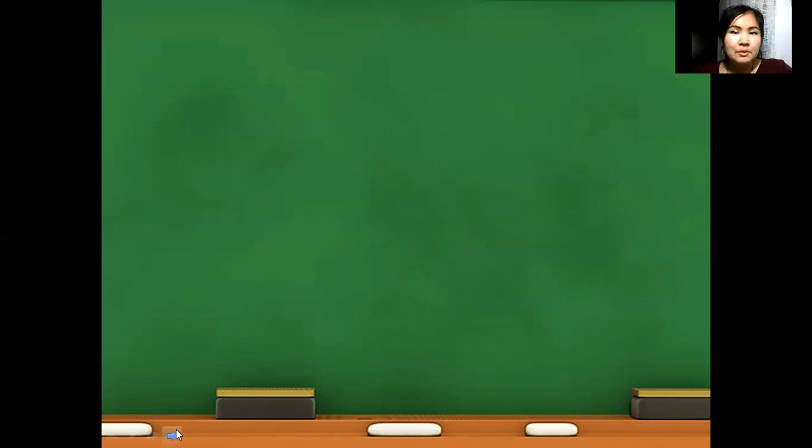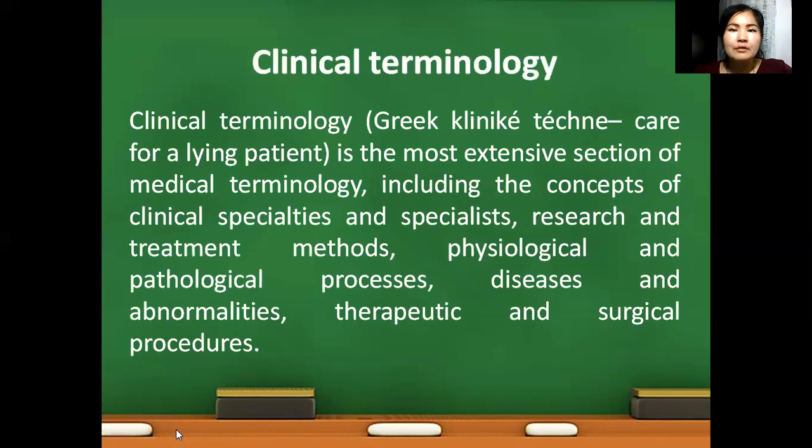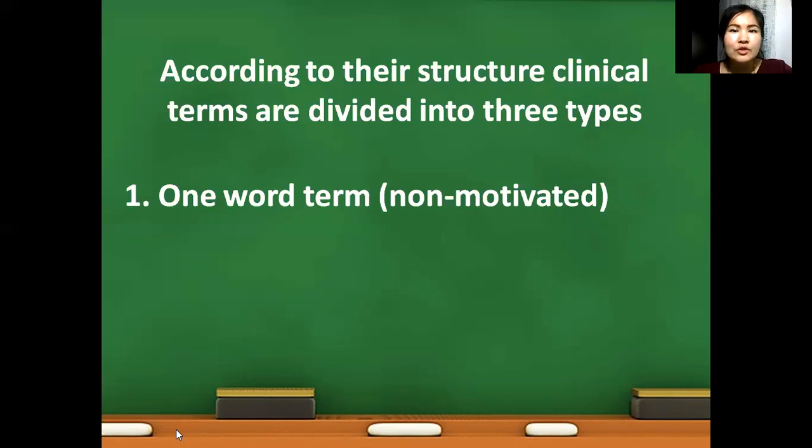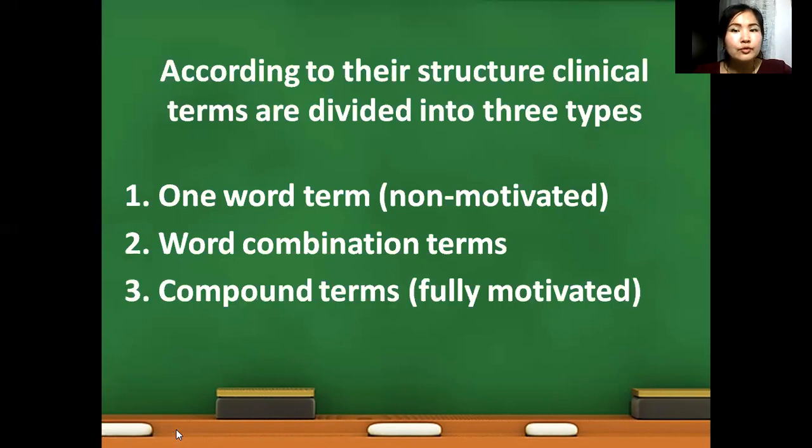What is clinical terminology? Clinical terminology is the most extensive section of medical terminology. It includes the concepts of clinical specialties and specialists, research and treatment methods, physiological and pathological processes, diseases and abnormalities, therapeutic and surgical procedures. According to their structure, clinical terms are divided into three types: one word terms which are non-motivated, word combination terms, and compound terms which are fully motivated.